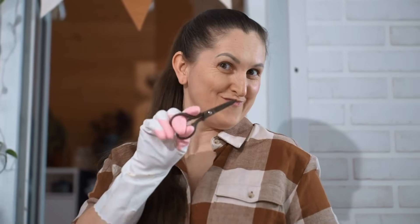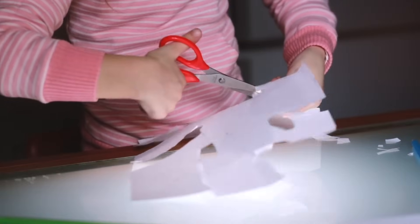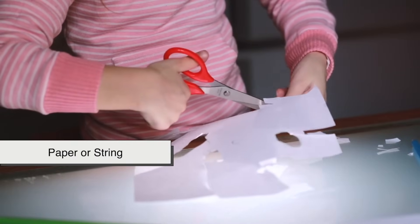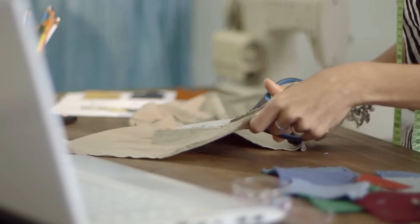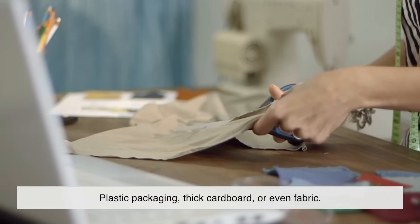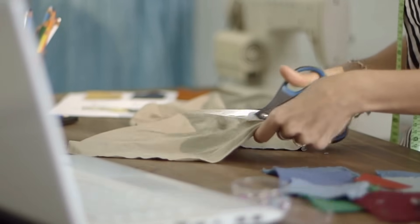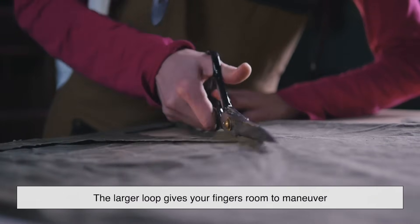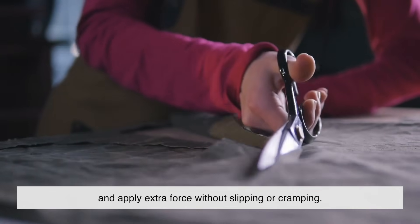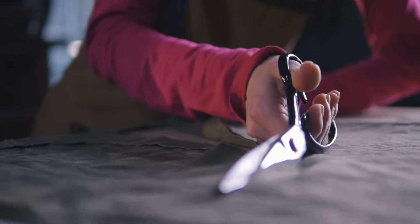The handle design also influences how scissors behave during different tasks. When you're cutting something soft, like paper or string, you don't need much force. But when you're tackling tougher materials, plastic packaging, thick cardboard or even fabric, the handle becomes your main source of leverage. The larger loop gives your fingers room to maneuver and apply extra force without slipping or cramping.